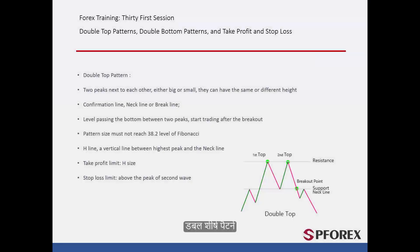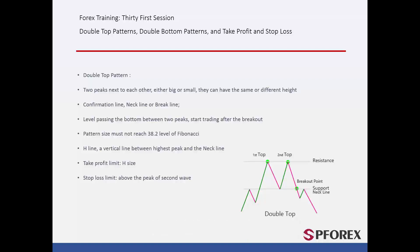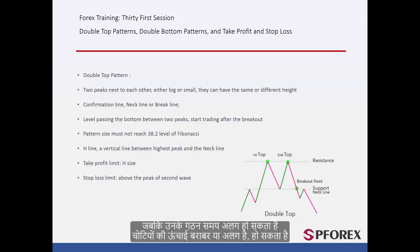Double Top Pattern: When two peaks on an uptrend are formed next to each other, a double top pattern can be drawn by placing two level lines on the highest peak, in addition to the valley between two peaks. The height of peaks can be equal or different, while their forming time may differ.